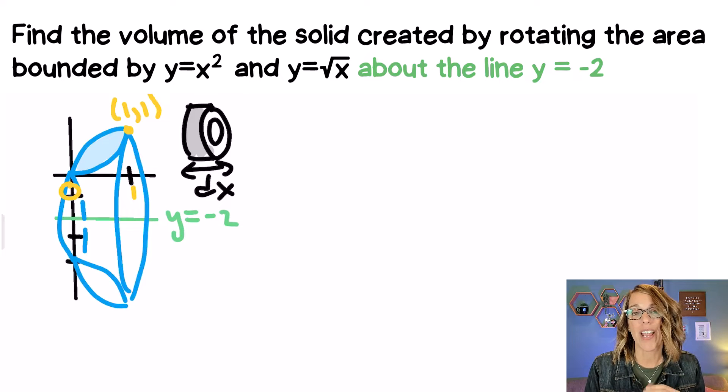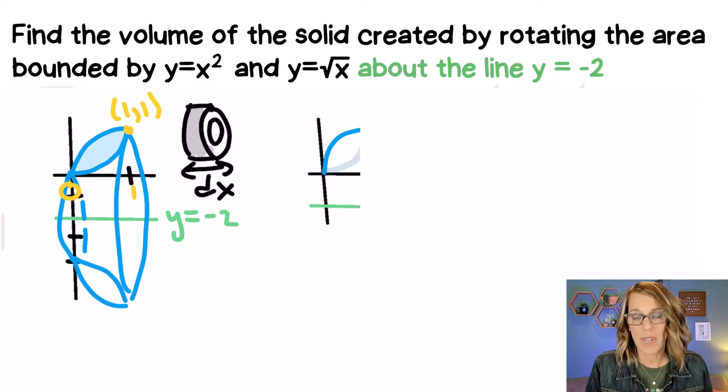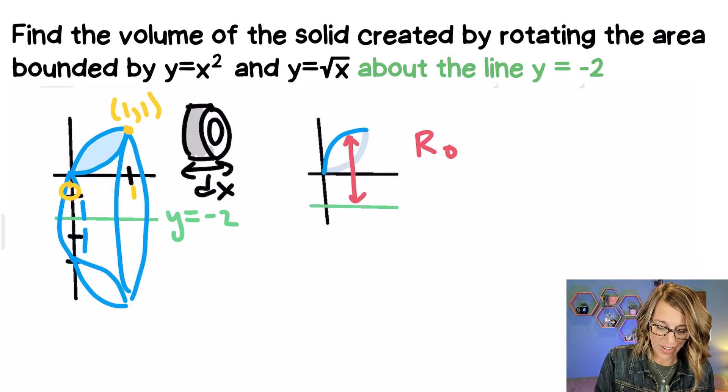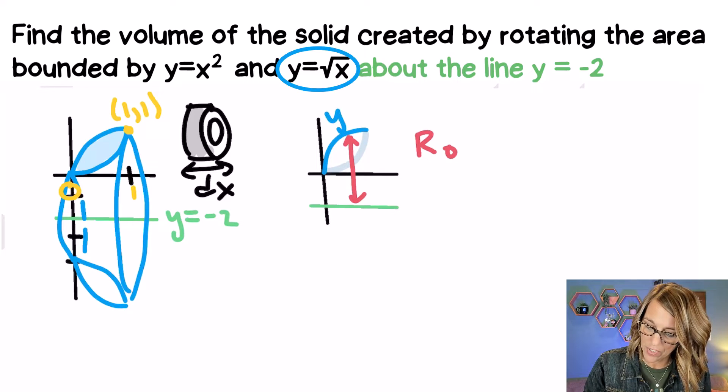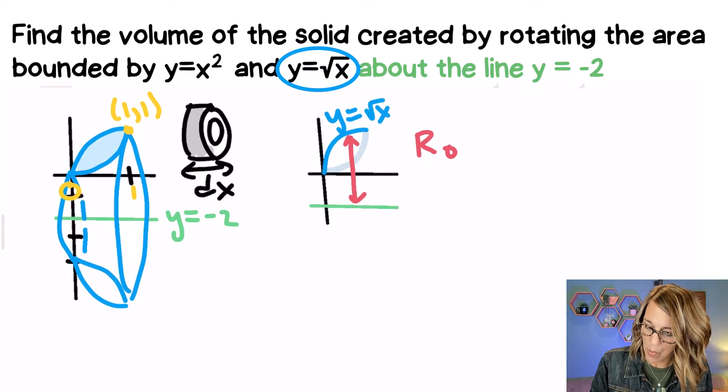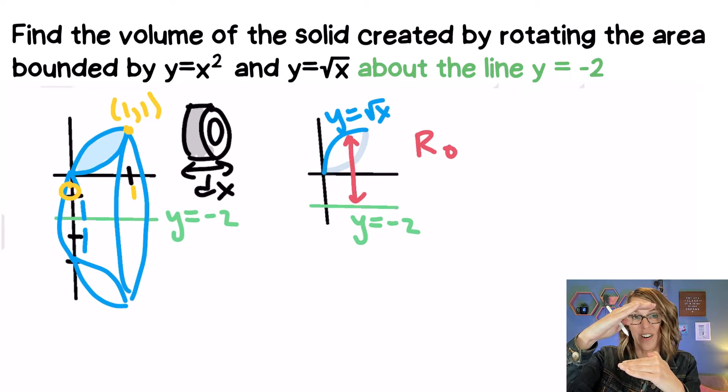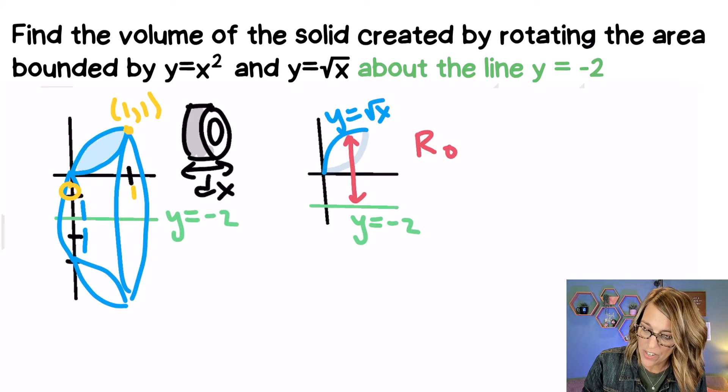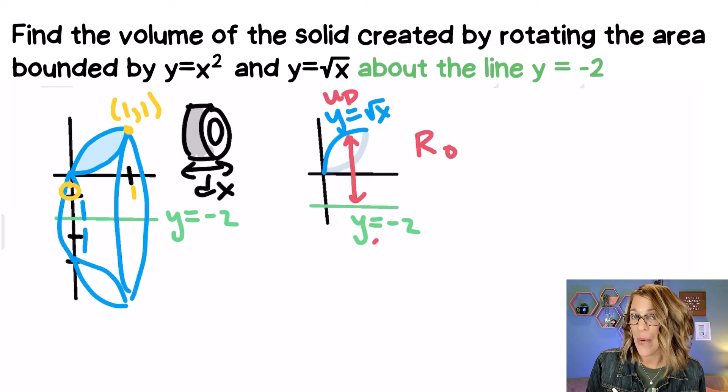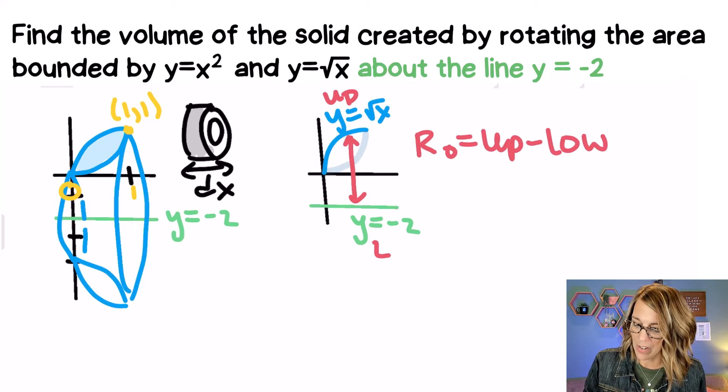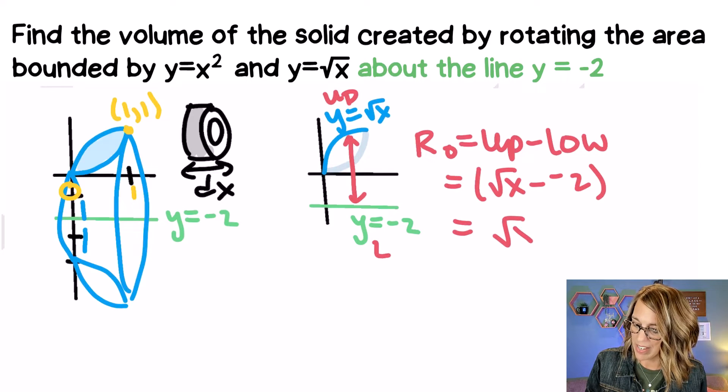I also need to figure out what my outer radius and my inner radius are. So I've got a picture here of just what we need to figure out the outer radius of revolution. Now this is going to be the distance between that upper curve and that upper curve is y equals square root of x and my axis of revolution which is y equals negative 2. Now in this case I'm going to take the upper minus the lower and as I do that upper minus lower my upper function is the radical x and my lower function is the negative 2. So I'm going to do upper minus lower. Upper minus lower is going to be the square root of x minus negative 2. So let's go ahead and call that radical x plus 2.